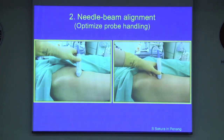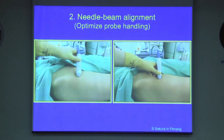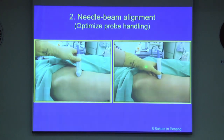The key to good needle imaging is the ability to make small movements of the probe, and in order to achieve this you must control the probe precisely. This is best achieved by stabilizing the probe. The outer aspect of the probe hand should rest on the skin of the patient.